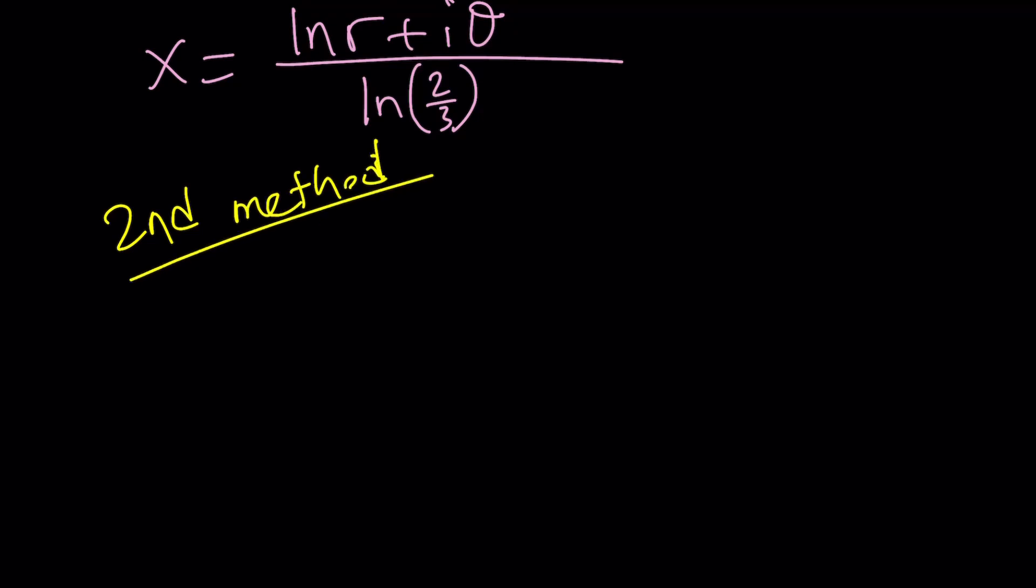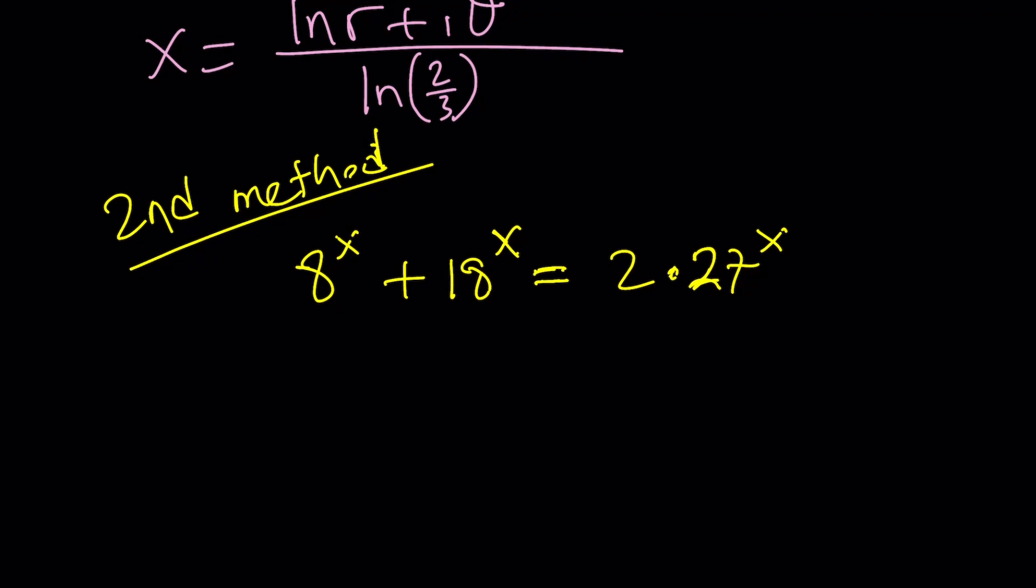Now, with the second method, we are also dealing with something similar. But this time, we're using substitution a little differently. So let me rewrite the problem. 8 to the x plus 18 to the x equals 2 times 27 to the power x. I don't know why we're getting interruptions like this. And then I'm going to go ahead and do the following. I'm going to call 2 to the power x, I'm going to call that a, and 3 to the power x, b.